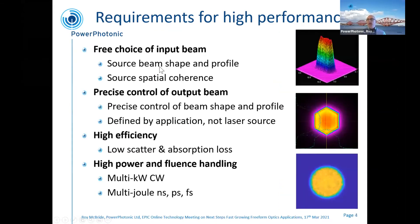In all these cases, the challenge is to take a laser beam that's typically Gaussian or some other shape not matched to the process, and match it to the process. By matching it to the process, you're typically trying to get as much of that power or fluence above a process threshold as possible, while minimising the rest. Other applications are about managing heat flow across parts — you want unusually shaped beams to heat specific regions. The overall theme is precise control of beam shape and profile so that it's defined by the application and not by the laser source.